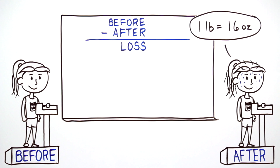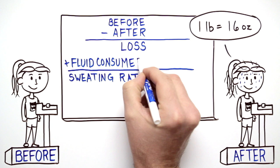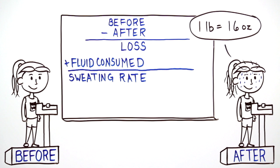One pound is equivalent to about 16 ounces of water. To understand the total sweating rate, the amount of fluid the athlete drinks during exercise is added back in.